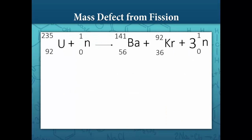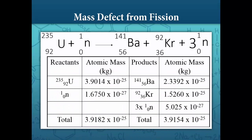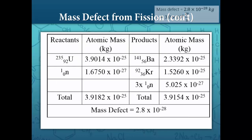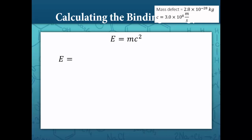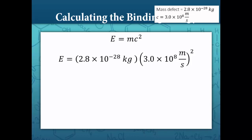Let's calculate the mass defect and binding energy of this induced fission example. Before we calculate mass, notice that the sum of the mass numbers on the reactant side is equal to the sum of the mass numbers on the product side, as are the sums of the atomic numbers. The mass of the reactants — uranium-235 and a neutron — totals 3.9182 times 10 to the negative 25 kilograms, whereas the mass of the products totals 3.9154 times 10 to the negative 25 kilograms. This leaves us with a mass defect of 2.8 times 10 to the negative 28 kilograms. We calculate the energy by plugging this into E equals mc squared: energy equals 2.8 times 10 to the negative 28 kilograms times the speed of light, 3.0 times 10 to the eighth meters per second, squared. The binding energy is equal to 2.5 times 10 to the negative 11 joules.